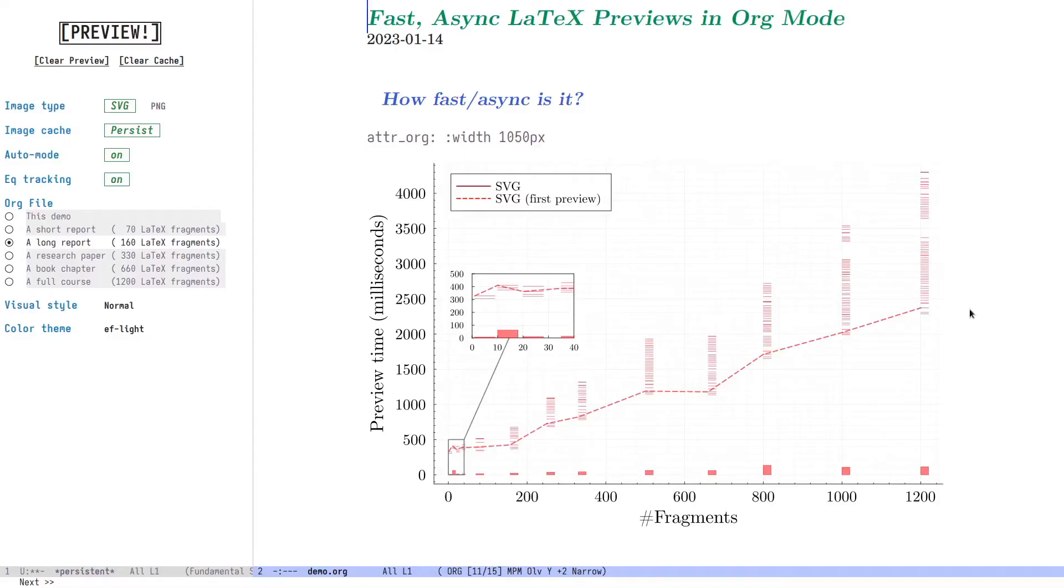But I've been holding out on you. We've been generating previews under the slowest possible settings. Org mode provides SVG and PNG previews, and the latter are generated much faster. Additionally, we can turn off image caching for even more speed. Let's go check out that 1200 fragment file now.